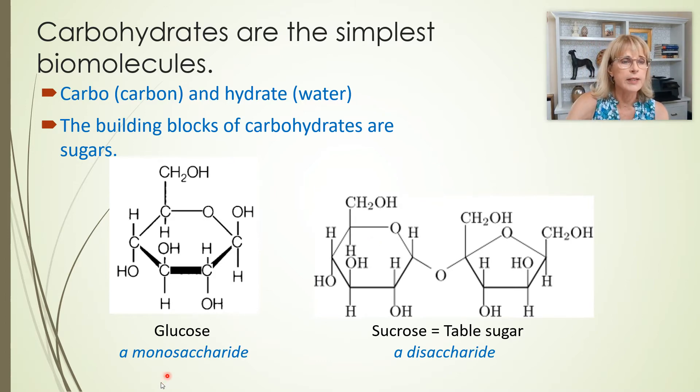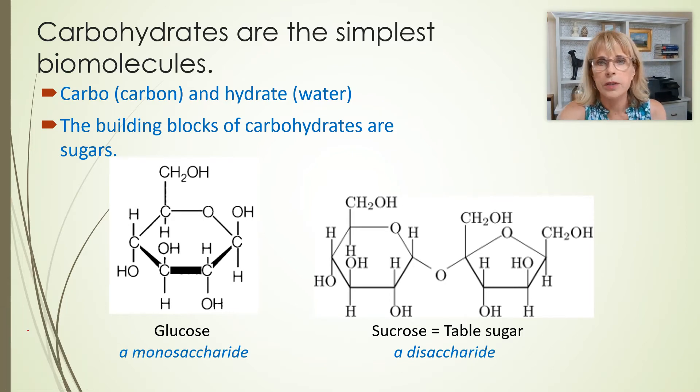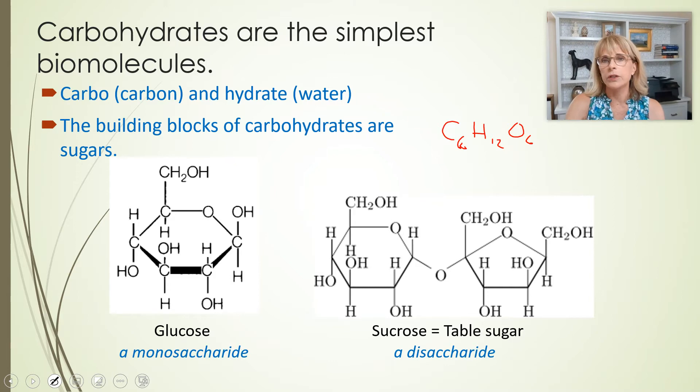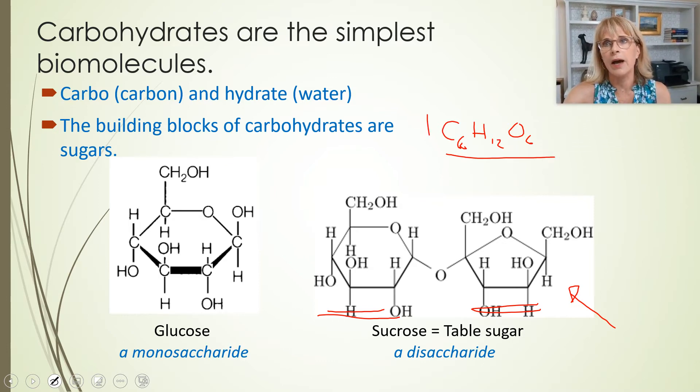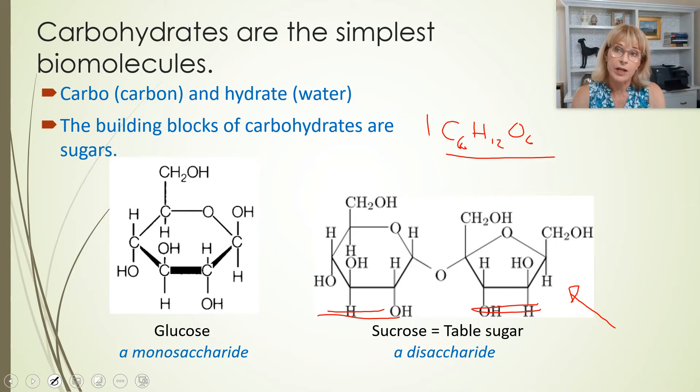If I were to write the general formula for glucose, glucose is C6H12O6. But if I were to write the molecular formula for fructose, it is also C6H12O6. Because the difference between glucose, this is glucose, and fructose, this is fructose. The difference is not in how many carbons and oxygens and stuff they have. The difference is how they are arranged.